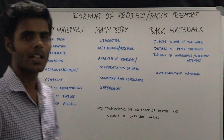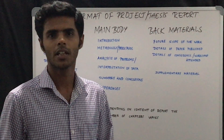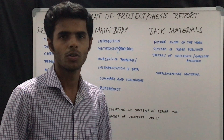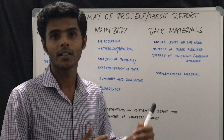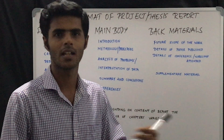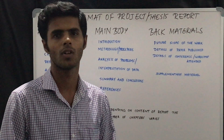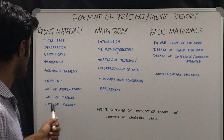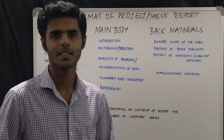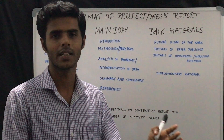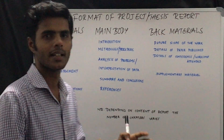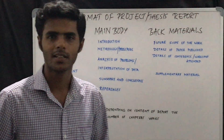Then the next one will be the list of tables. Whatever tables you are including in your dissertation from chapter one onwards, you have to list them all at the beginning so that readers can understand which table is in which chapter and what it indicates. Similarly, you have to include a list of figures, showing which chapter each figure appears in and how it is numbered.